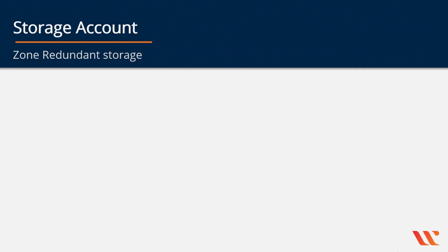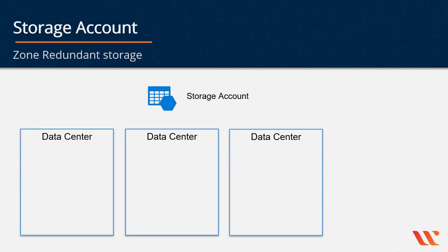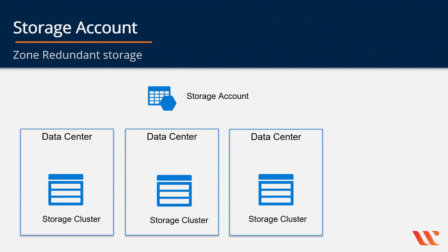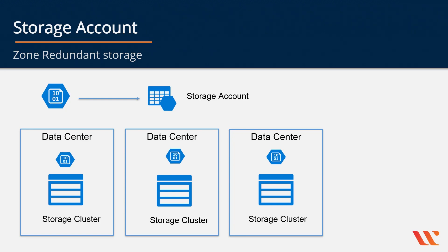Next we have zone redundant storage. We have multiple data centers — in local redundant storage we had only a single data center, but here multiple data centers come into play. You have storage clusters in each data center. When your object gets written to your storage account, that object gets replicated across the different storage clusters in the different data centers. The biggest advantage is that even if a data center were to go down, you have other data centers in place and your object will still be available. But again, if the entire region goes down, the object is not available — so we still have a problem when it comes to region-wide disaster scenarios.